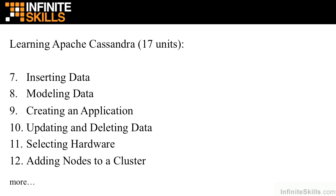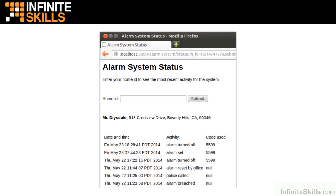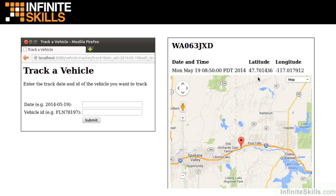In Unit 8, Modeling Data, we're going to learn what is the best way to model data in Cassandra. In Unit 9, Creating an Application, we're going to create a couple of applications. One is our Alarm System Status application, which allows a homeowner to enter their home ID and see the activity for their home alarm system. The second application is for a rental car company to track the location of their automobiles — entering a date and vehicle ID to find out exactly where a vehicle is located.